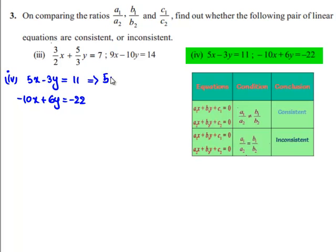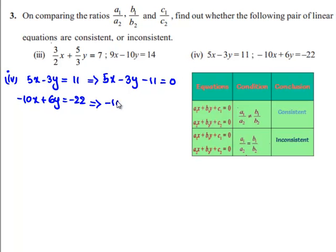The first equation can be written as 5x minus 3y minus 11 is equal to 0 and the second equation can be written as minus 10x plus 6y plus 22 is equal to 0.